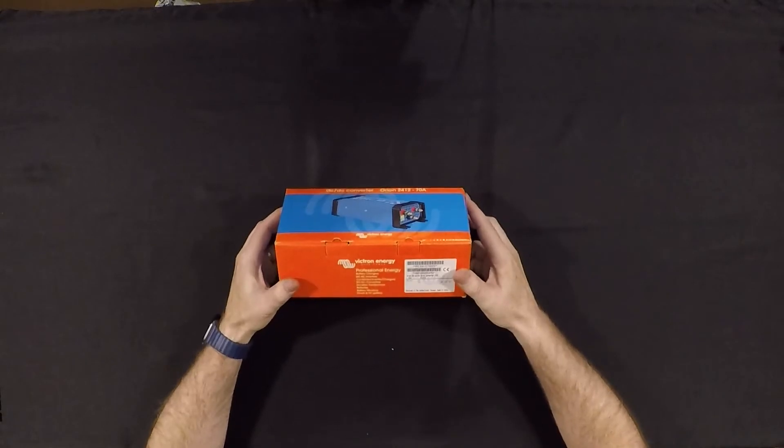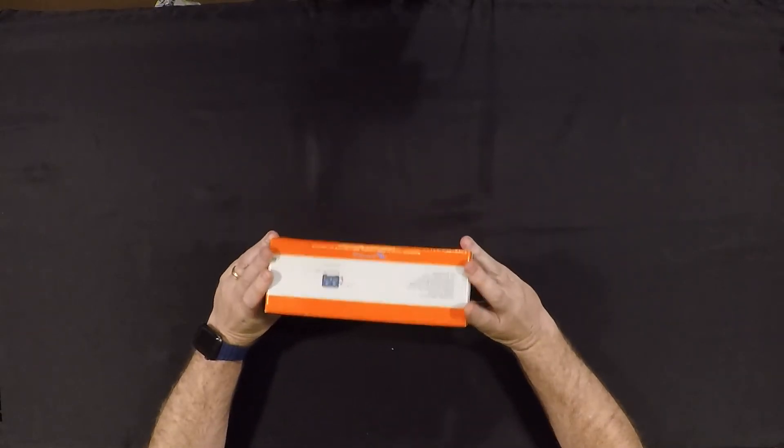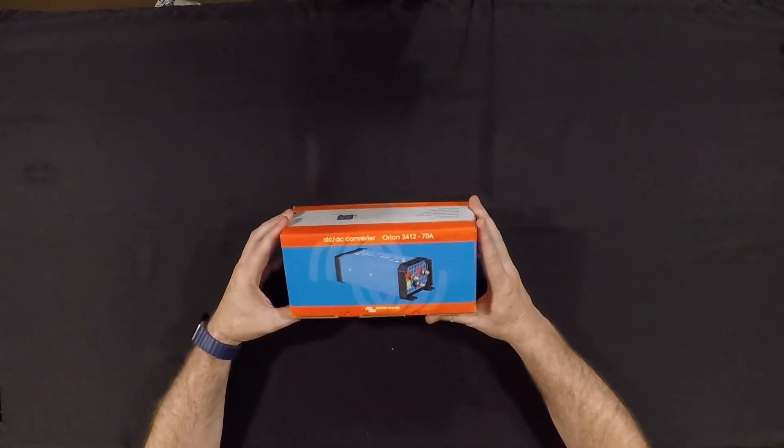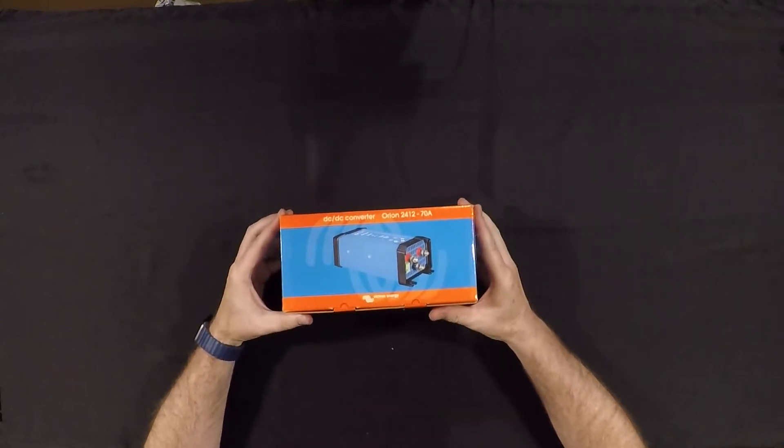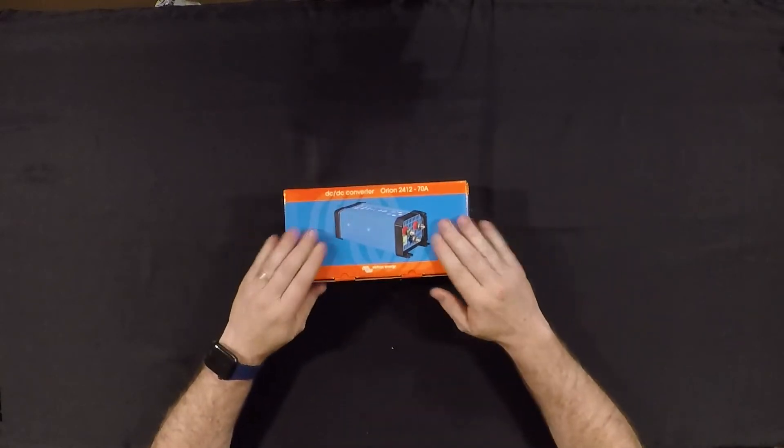So let's talk a little bit about the Orion DC to DC converter for just a second before we open the box. The idea with these is that if you've got a 24 volt battery system, which is what I've got in mind, you need to be able to get from 24 volts to 12 volts.